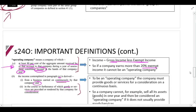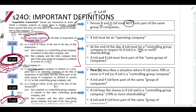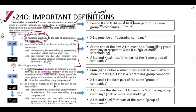To summarize Section 24O: if A Limited buys shares in X Limited using a loan, A Limited can claim the interest on that loan if X Limited is an operating company and A Limited has 70% or more of the shares. That is basically a summary of the section.